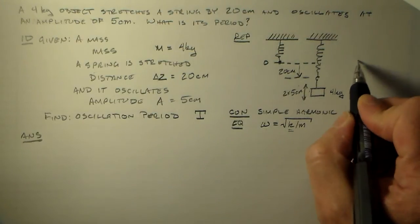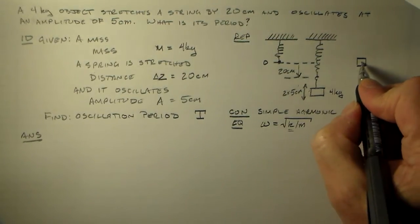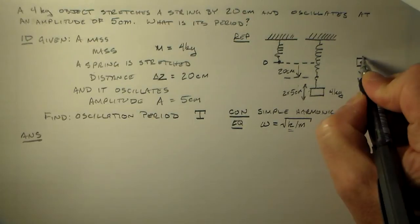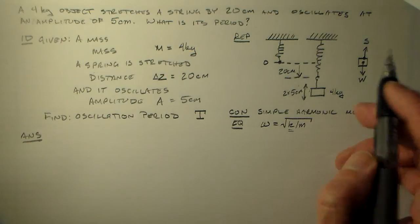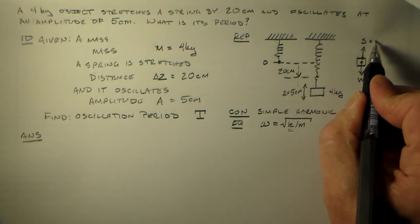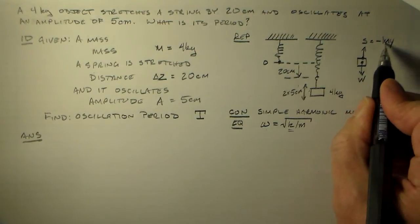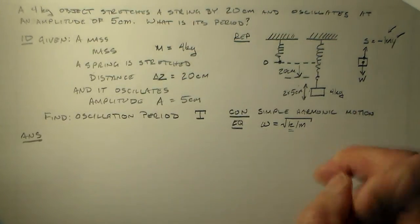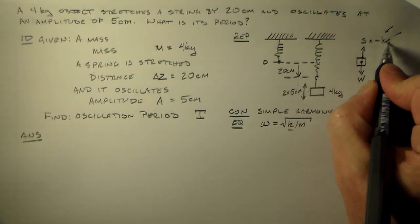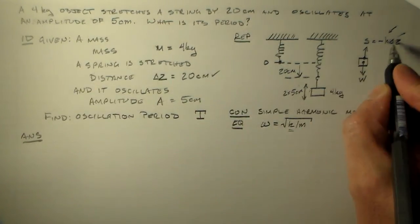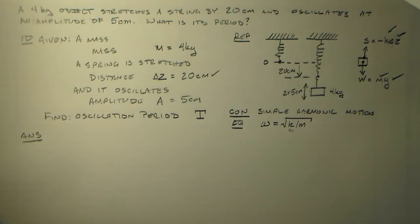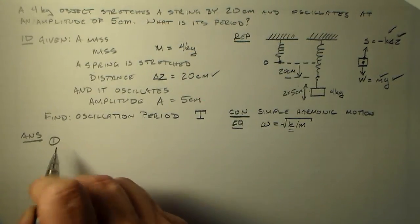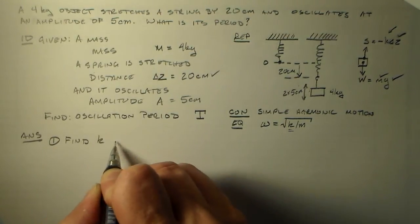The way I'd probably do that is with a nice free body diagram. Okay, so I've got some weight coming down here. I've got a spring force coming up here. And they balance out at 20 centimeters. So that would mean the spring force is minus k delta z. This is what I want. And this I have. Weight is equal to mg. This is a universal constant. I know g. I know m. So that'd be good. I know all those things. I can balance things out. So find k from the stretching.